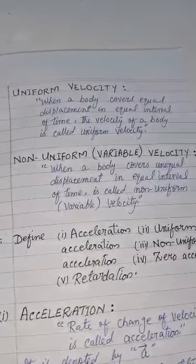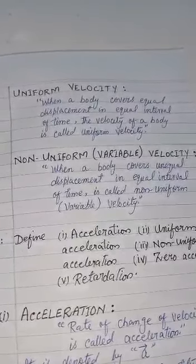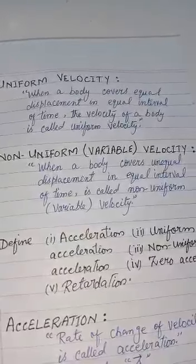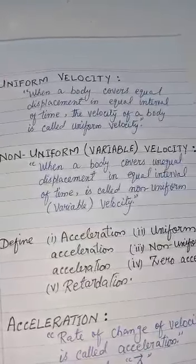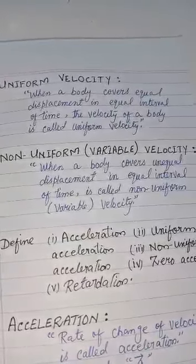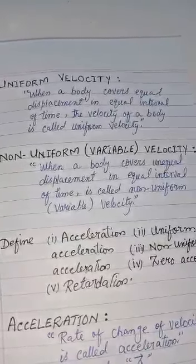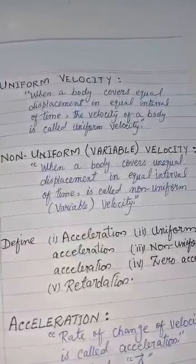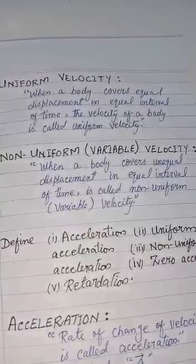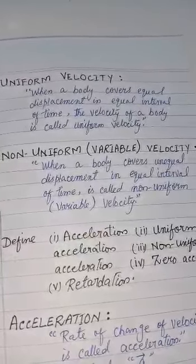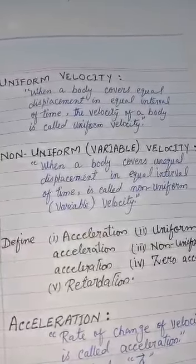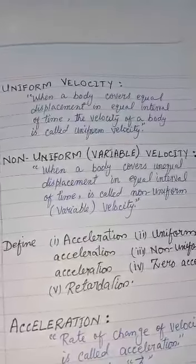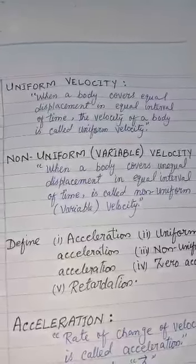Number 4: Non-uniform (variable) velocity. When a body covers unequal displacement in equal intervals of time, it is called non-uniform or variable velocity.